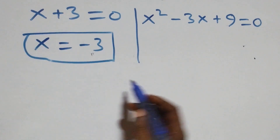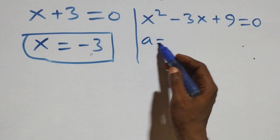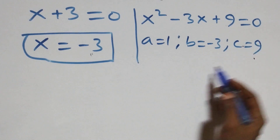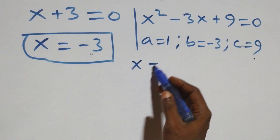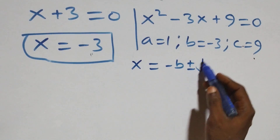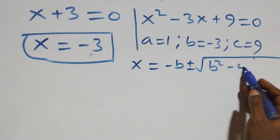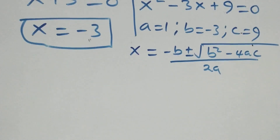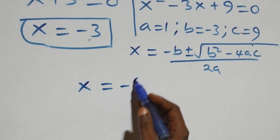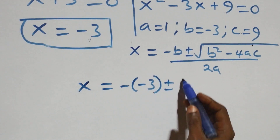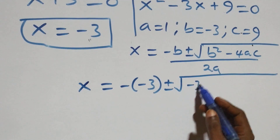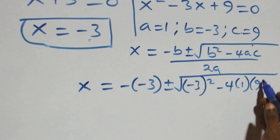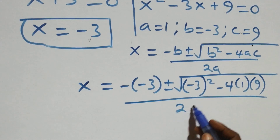From x plus 3 equals 0, we get x equals minus 3, which is a real solution. For the quadratic x squared minus 3x plus 9 equals 0, we have a equals 1, b equals minus 3, and c equals 9. Applying the quadratic formula: x equals minus b plus or minus square root of b squared minus 4ac, all over 2a. This gives x equals 3 plus or minus the square root of minus 3 squared minus 4 times 1 times 9, all over 2 times 1.